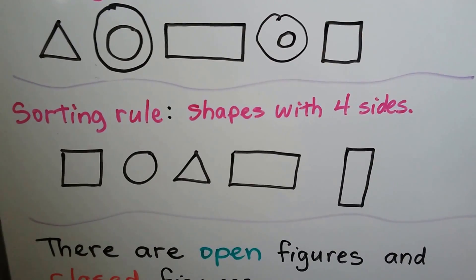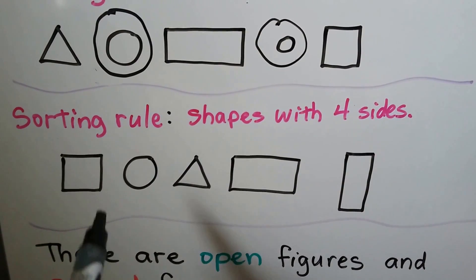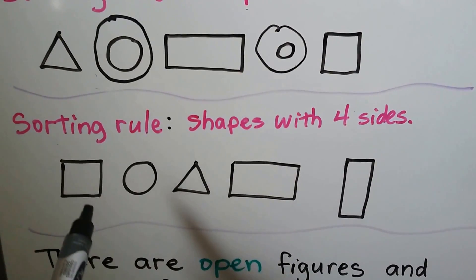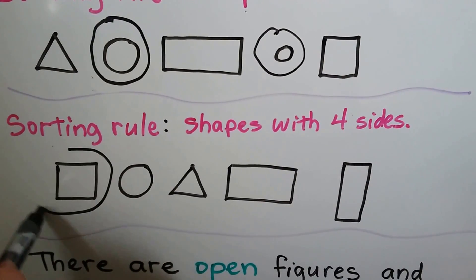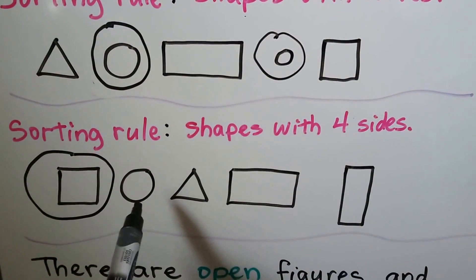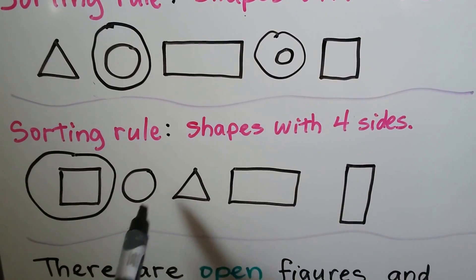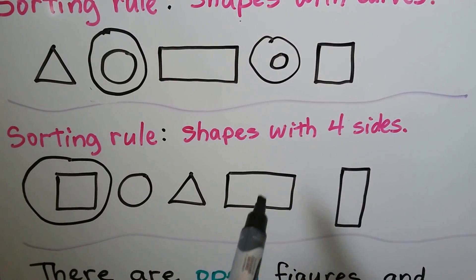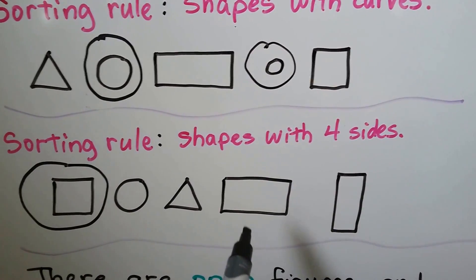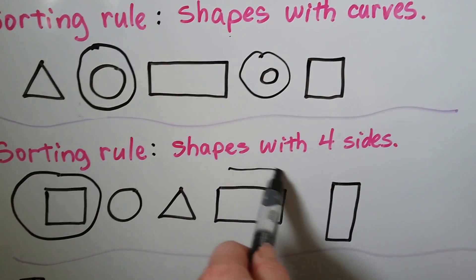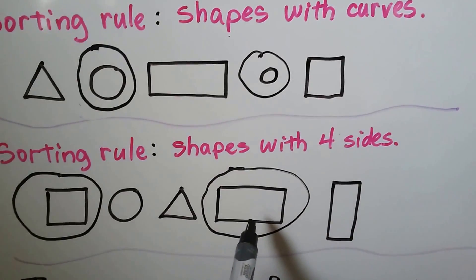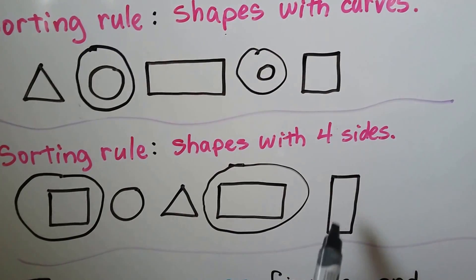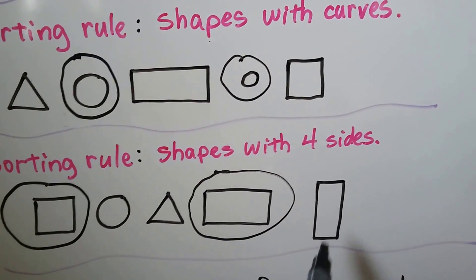This sorting rule says: shapes with four sides. A square has four sides — one, two, three, four — so we can circle that one. Circles don't have any sides; they have curves. Triangles have three sides. Rectangles have one, two, three, four sides. And this rectangle is just turned — it still has four sides.